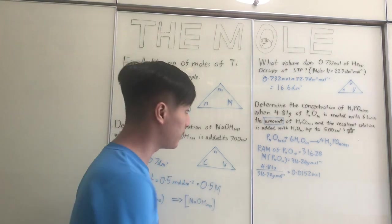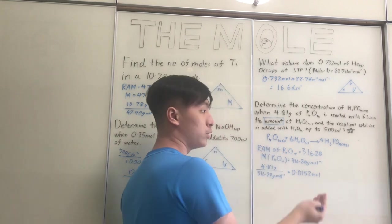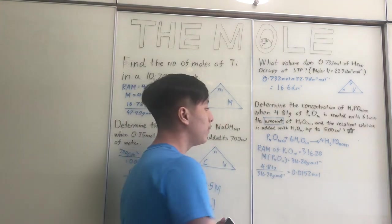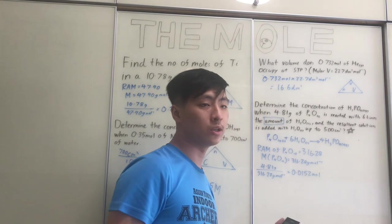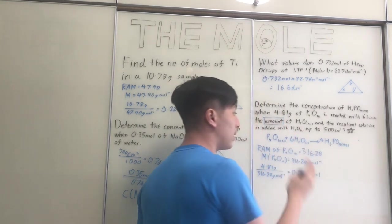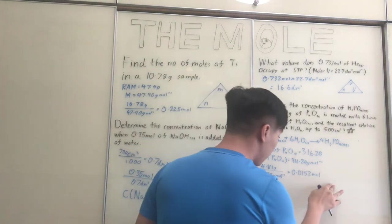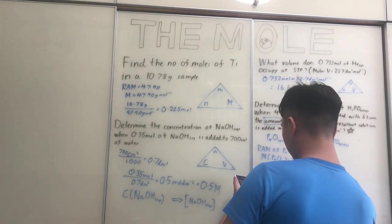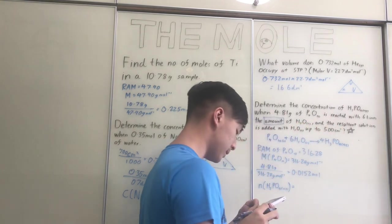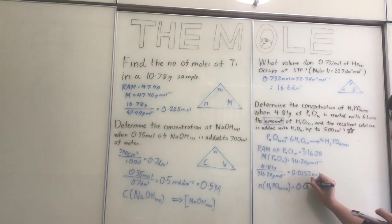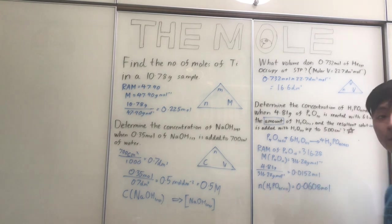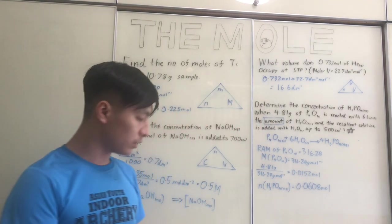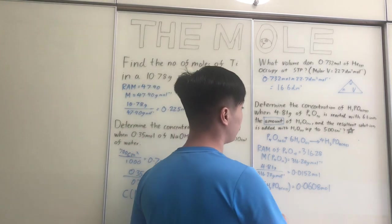From the balanced equation, the molar ratio of P₄O₁₀ to H₃PO₄ is 1:4. So 4 times as much phosphoric acid is produced. Number of moles of H₃PO₄(aq) = 0.0152 × 4 = 0.0608 moles. That completes the first part of the question — we've calculated the moles of phosphoric acid produced.